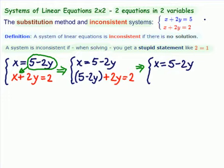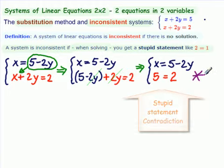And now we get ready to clean up this equation. And we say 5. No problem. Here's a 5. Minus 2y plus 2y. Uh-oh. They cancel. There's no y's left. We have an equal sign here. And on this side, we have a 2. 5 does not equal 2. That's our stupid statement. Our contradiction.